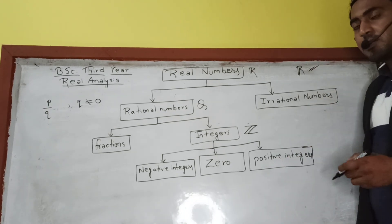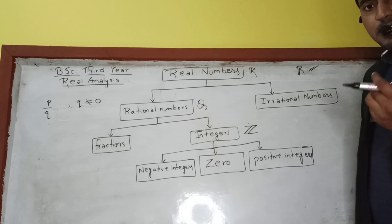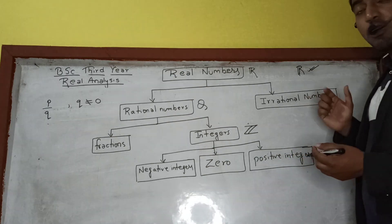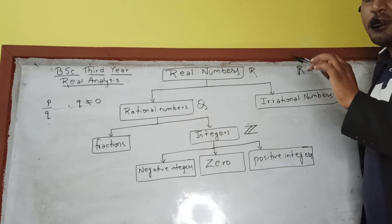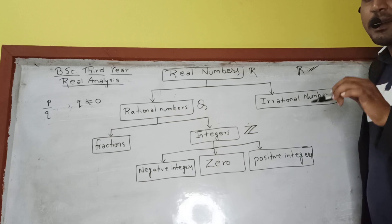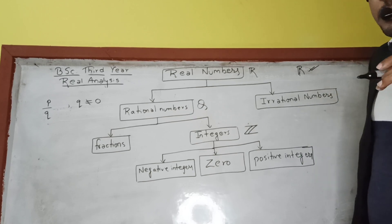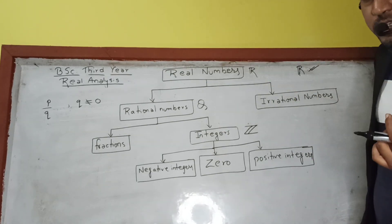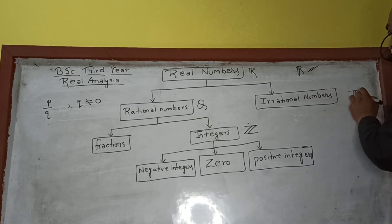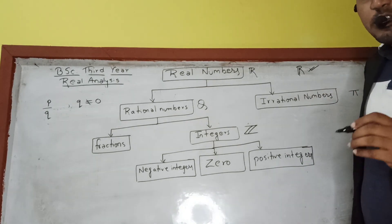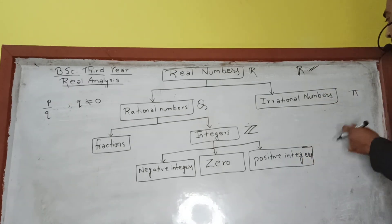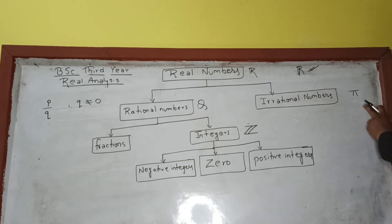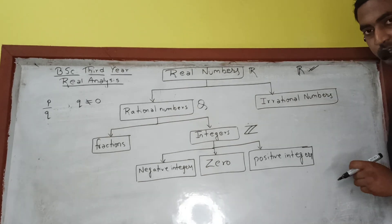Numbers that are neither terminating nor recurring are irrational numbers. For example, √2 gives a value like 1.something something — it keeps going without repeating. Similarly, π is irrational; its value is approximately 3.143... — neither terminating nor recurring. These types of numbers are irrational numbers.